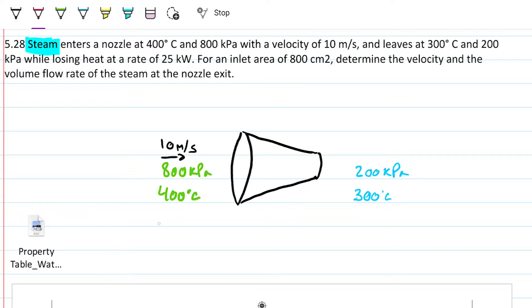What else? We know the area now. This time we know the area, the cross-sectional area. This area here is 800 centimeters squared. We'll need to convert this into meters squared very soon. And we're losing heat, so this is not adiabatic.